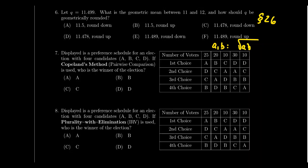Question 7 returns to basic voting: can you determine the winner using pairwise comparison, Copeland's method? With four candidates A, B, C, D, there are six possible pairings. You determine one-on-one who wins each pairing — the winner gets a point, a tie gets half a point — and whoever has the most pairwise victories wins the election using Copeland's method.